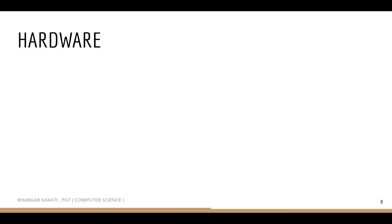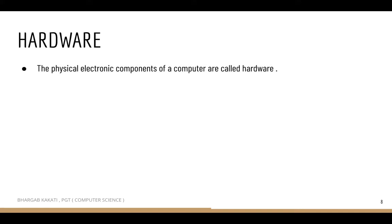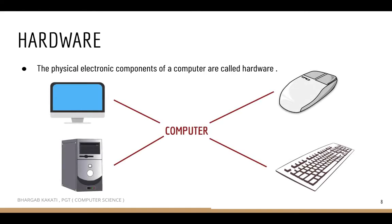Now we need to know about a few more terms. The first term is hardware. The physical electronic components of a computer are called hardware — these are components we can touch. Some examples of hardware are the keyboard, mouse, CPU, and monitor.